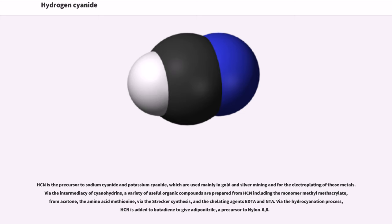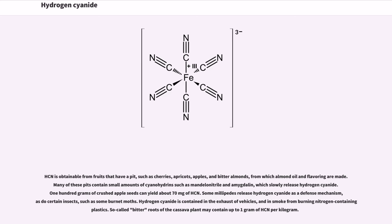HCN is obtainable from fruits that have a pit, such as cherries, apricots, apples, and bitter almonds, from which almond oil and flavoring are made. Many of these pits contain small amounts of cyanohydrins such as mandelonitrile and amygdalin, which slowly release hydrogen cyanide. 100 grams of crushed apple seeds can yield about 70 milligrams of HCN.